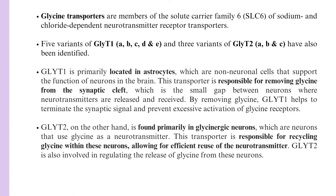Five variants of Glycine Transporter 1 — A, B, C, D, and E — and three variants of Glycine Transporter 2 — A, B, and C — have also been identified.